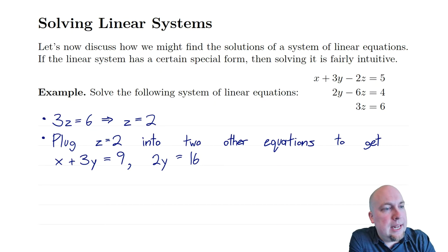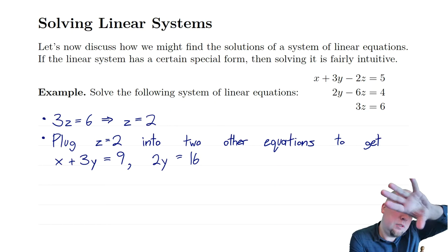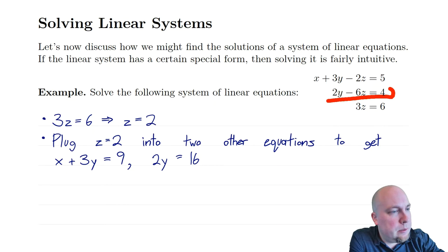When I plug z=2 into the top equation, I get x plus 3y, and then minus 4 equals 5, so when I move the minus 4 over to the other side, I get a 9 on the right-hand side. Similarly, in the second equation I get 2y minus 12 equals 4, and when I move that minus 12 over to the other side, I get 16.